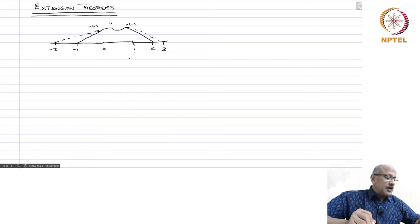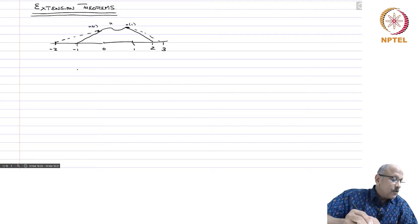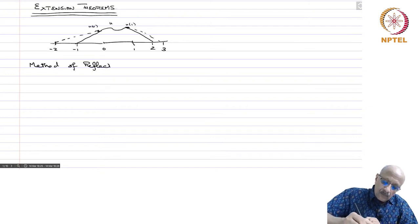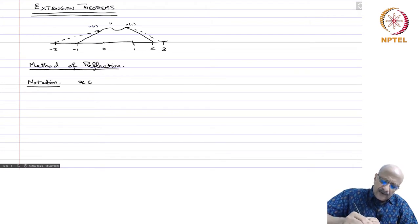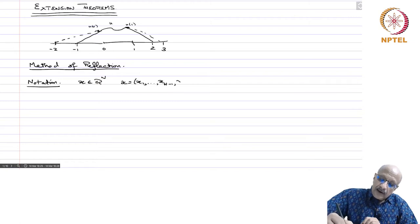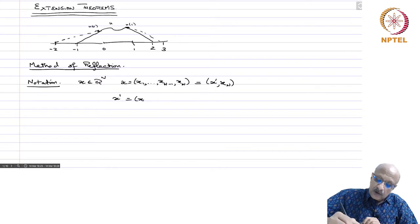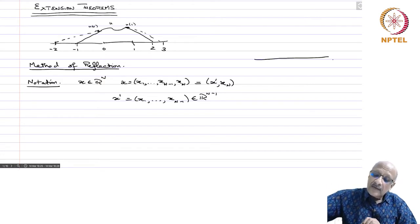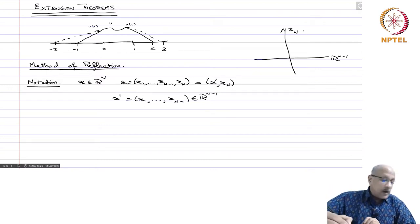Now we are going to describe the method of reflection, which gives a very general method — especially when there are flat portions of the boundary — to give you an extension. First, some notation. We take x in R^n and write it as (x', x_n) where x' = (x_1, ..., x_{n-1}) belongs to R^{n-1}. So we are looking at R^n as R^{n-1} cross R in the x_n direction.